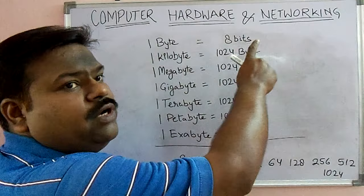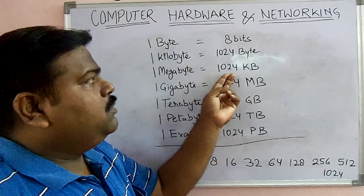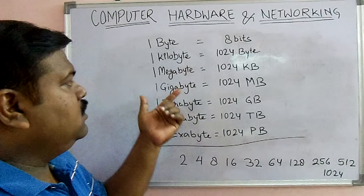Likewise, 1 kilobyte is equal to 1024 bytes, and 1 megabyte is equal to 1024 kilobytes. Similarly, we have gigabyte, terabyte, petabyte, and exabyte.